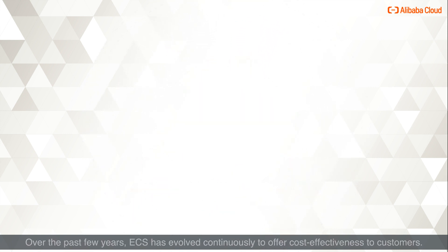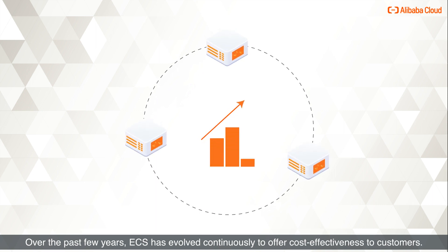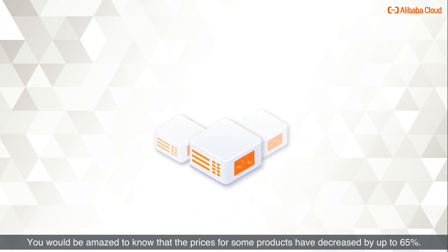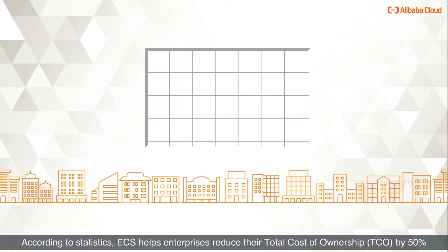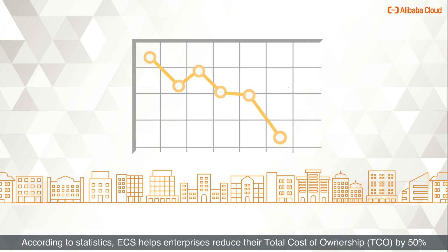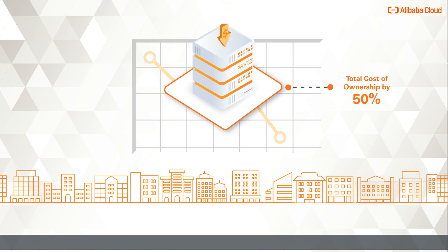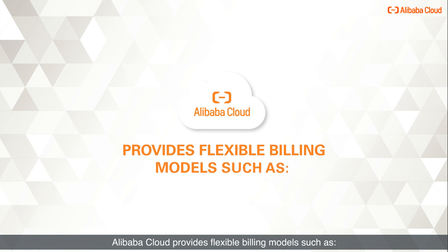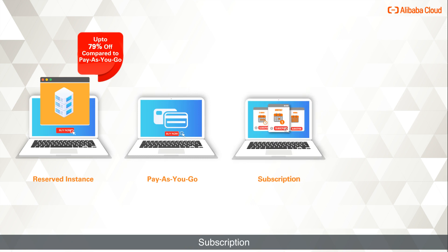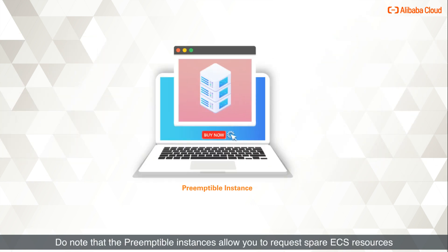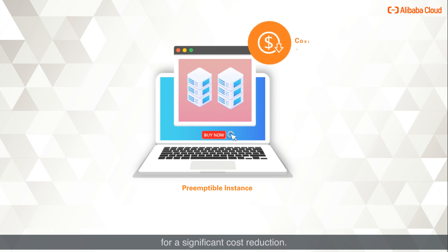Billing: Over the past few years, ECS has evolved continuously to offer cost-effectiveness to customers. Prices for some products have decreased by up to 65%, and ECS helps enterprises reduce their total cost of ownership by 50% compared to on-premise servers. Alibaba Cloud provides flexible billing models such as Reserved Instance, Pay-as-you-go, Subscription, and Preemptible Instance — the latter allowing you to request spare ECS resources for a significant cost reduction.